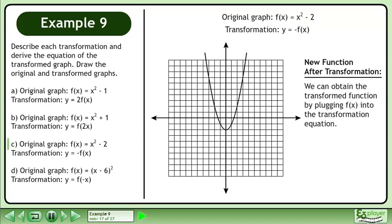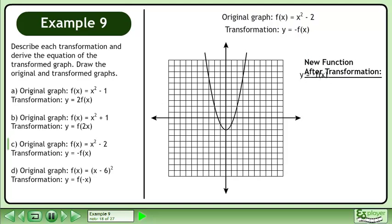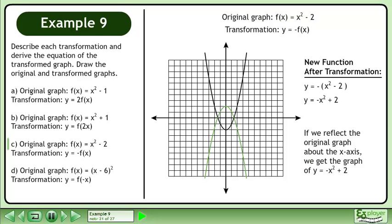We can obtain the transformed function by plugging f of x into the transformation equation. Bring down the transformation equation, then replace f of x with x squared minus 2. Multiply negative 1 through the brackets to get negative x squared plus 2. If we reflect the original graph about the x-axis, we get the graph of y equals negative x squared plus 2.